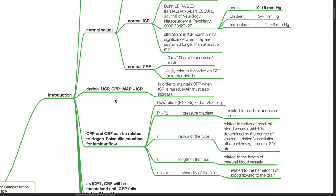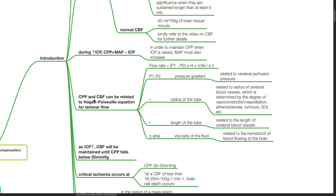During increased intracranial pressure, CPP equals MAP minus ICP. Thus, to maintain cerebral perfusion pressure when ICP is raised, mean arterial pressure must also increase. CPP and CBF can be related to the Hagen-Poiseuille equation for laminar flow, where flow rate equals P1 minus P2 times R to the power of 4 times pi divided by 8 times L times eta, where P1 minus P2 is the pressure gradient related to cerebral perfusion pressure, R is the radius of the tube related to cerebral blood vessel radius, L is length of the tube related to vessel length, and eta represents viscosity of the fluid related to the hematocrit of blood flowing to the brain.